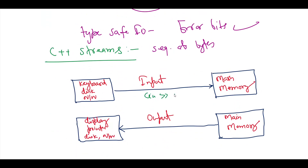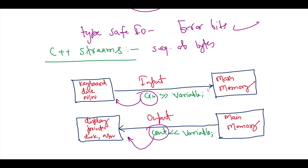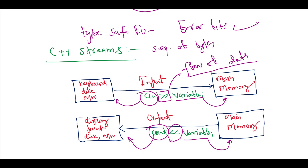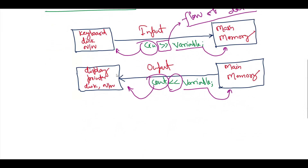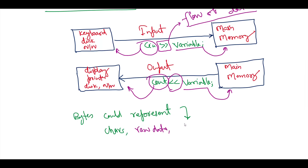You can understand this from these operations: cin is connected to input devices and cout is connected to output devices. When we talk about a variable, we are talking about main memory. In the case of input, data is flowing from the device towards main memory, and in the case of output, data is flowing from main memory to the devices. The direction of the arrows shows the same thing — you can remember the flow of data by the direction of these arrows.